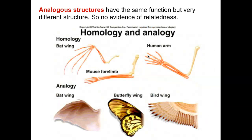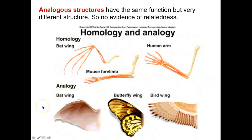Analogous structures have the same function but very different structure, so they provide no evidence of relatedness. For example, bat wings, butterfly wings, and bird wings are all used for flight, but they don't mean a bird is closely related to a butterfly. If you dissected a bird wing it would be completely different from a butterfly wing — there are no bones in a butterfly wing. Analogous structures arise because organisms share the same task, but do not point to evolutionary relatedness.